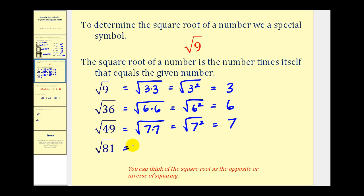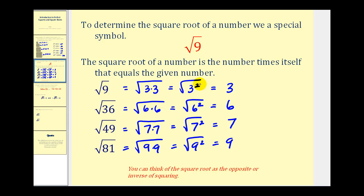Let's look at one more. The square root of eighty-one, because eighty-one is nine times nine, or nine squared, would equal one factor of nine. One more thing to notice: taking the square root of a number and squaring a number are opposite operations, or could be called inverse operations.